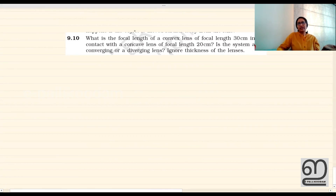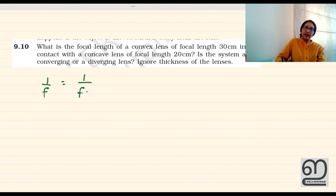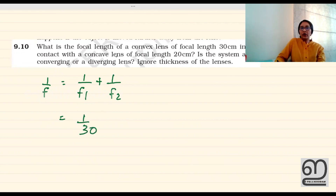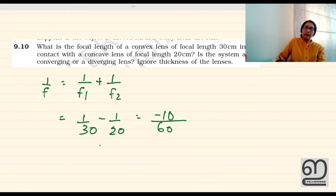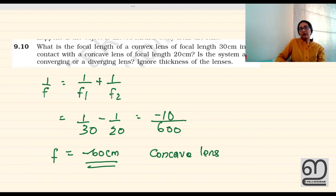Last question: what is the focal length of a convex lens of focal length 30 cm in contact with a concave lens of focal length 20 cm? Using the combination formula: 1 by f equals 1 by f1 plus 1 by f2. The concave focal length is negative, so 1 by f equals 1 by 30 plus 1 by minus 20. Solving gives f equals minus 60 cm. Since it is negative, it is a concave, diverging lens of 60 cm focal length.